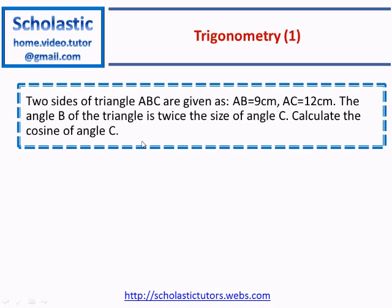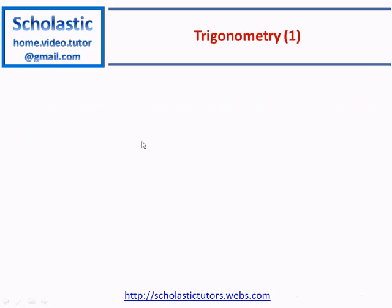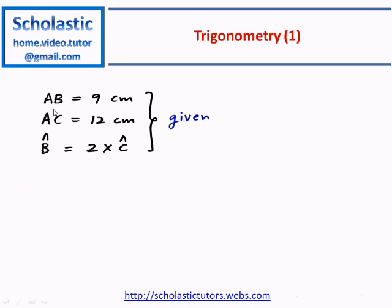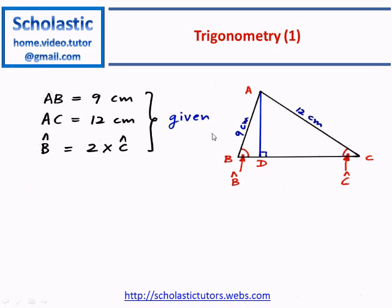First we'll draw the information given. It's given as AB equal to 9 centimeters, AC equal to 12 centimeters, and angle B is twice the size of angle C. If we draw them: AB equal to 9, AC equal to 12, and angle B and angle C.